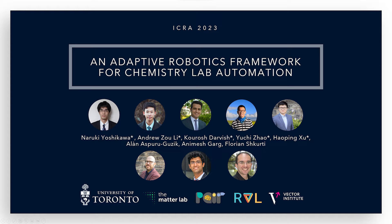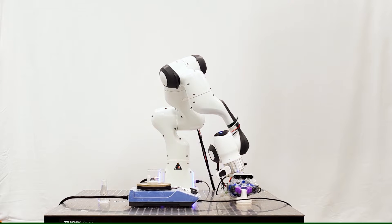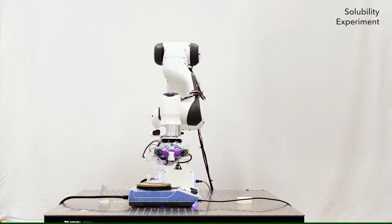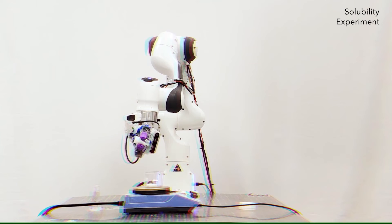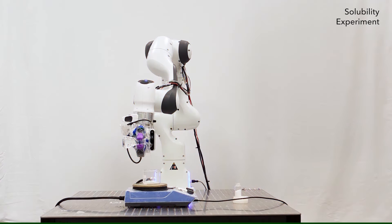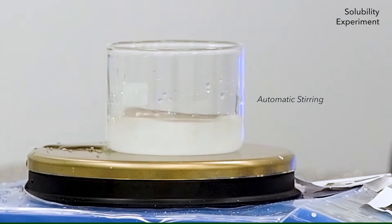We propose an adaptive robotics framework for chemistry lab automation. The proposed framework facilitates material discovery by using robots to help chemists through automating laborious experiments that are often dangerous. We verify the utility of our framework with several chemistry experiments, including solubility and recrystallization.